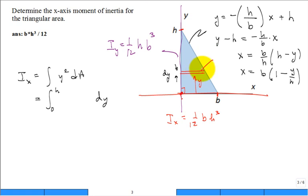Finally, now, I can re-express what is my dA. It's going to be b times 1 minus y over h times dy. That's the hard part, isn't it?